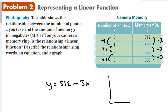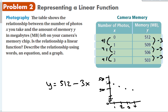To make a graph, the y-axis goes up to about 520, with 500 marked, and the x-axis shows number of pictures: 1, 2, 3, 4. Zero pictures is 512 megabytes, and then it decreases, giving us a nice straight line going down.